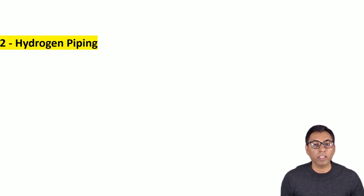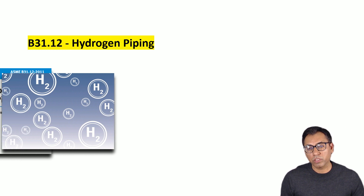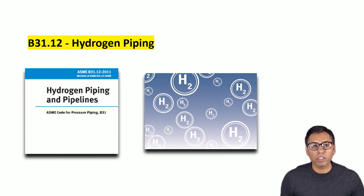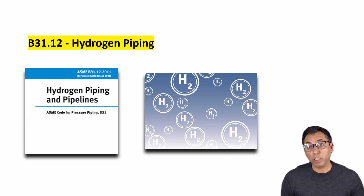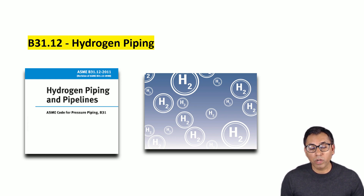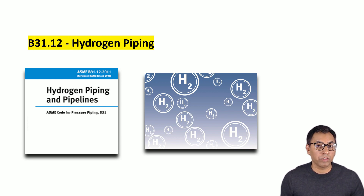The next chapter is B31.12, which is Hydrogen Piping. This code is applicable to piping in gaseous and liquid hydrogen service. For pipelines in gaseous hydrogen service, B31.12 is applicable up to and including the joint connection piping associated with pressure vessels and equipment, but it is not related to the vessels or pressure vessels that deal with hydrogen.